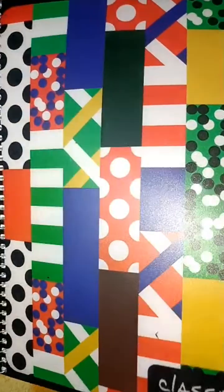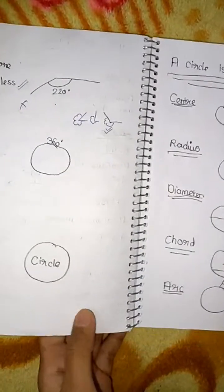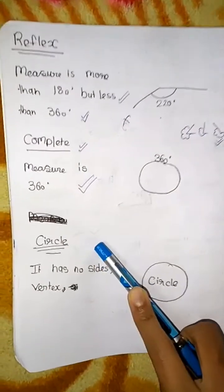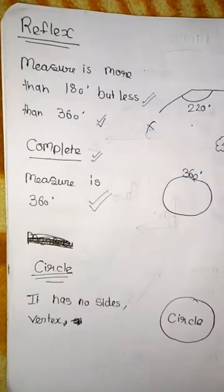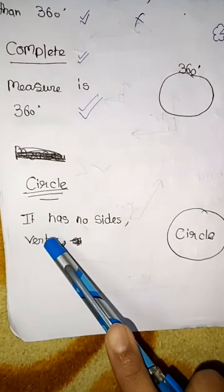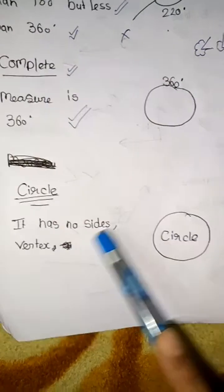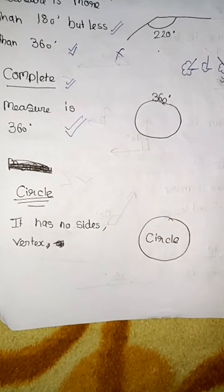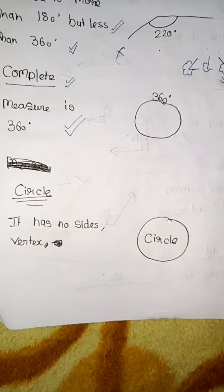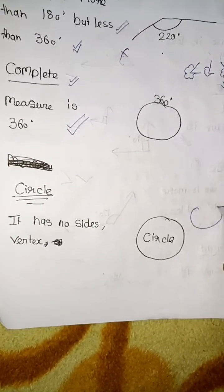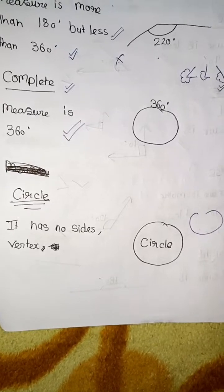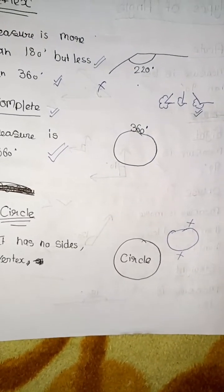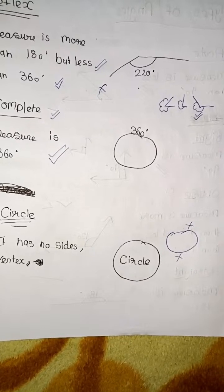Now we will be learning our next topic: circle. What is a circle? A circle has no sides and no vertex. A circle is just like this — it has no sides and no vertex.